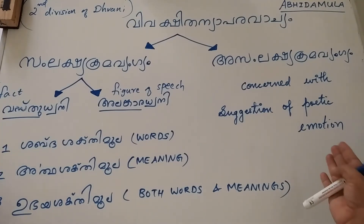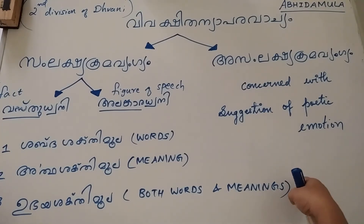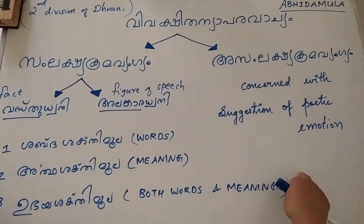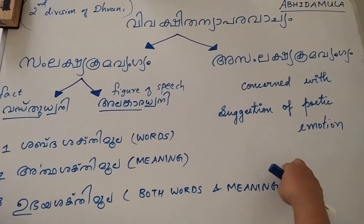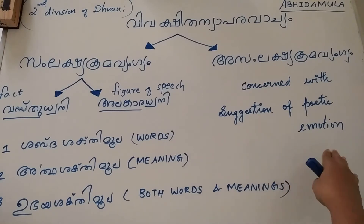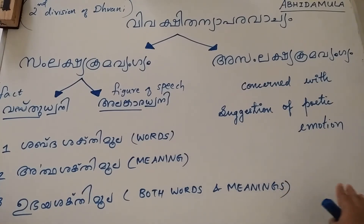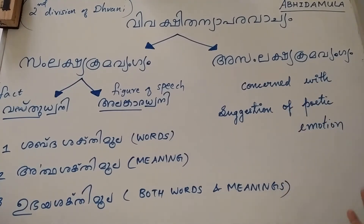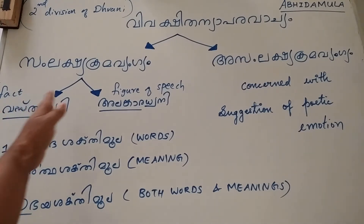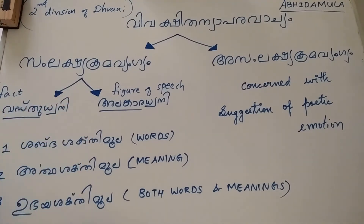Asamlakshya Krama Vangya is mostly concerned with the suggestion of poetic emotion, because the intermediate stages between the expression of the primary sense and the understanding of the suggested sense are rather imperceptible. Now let us focus on the subdivisions of Samlakshya Krama Vangya.